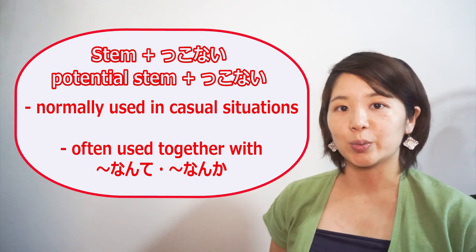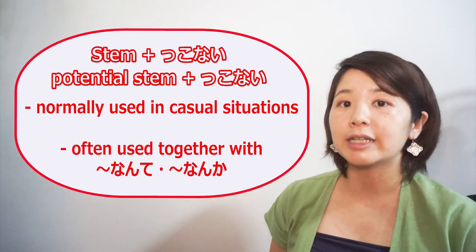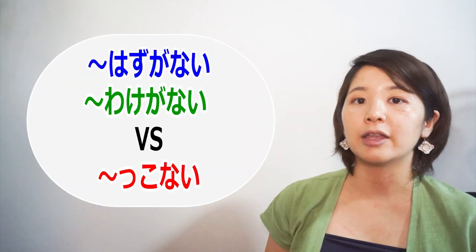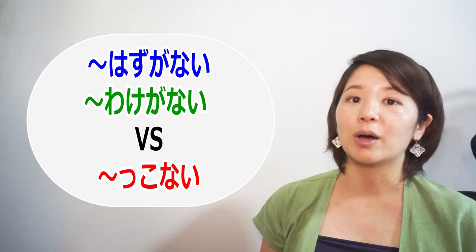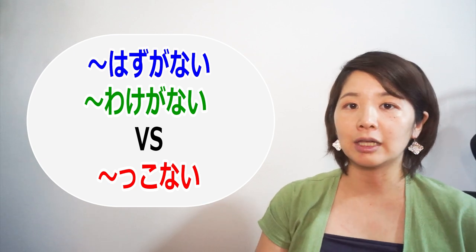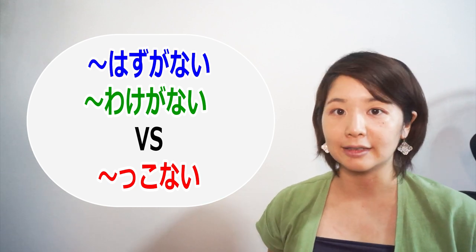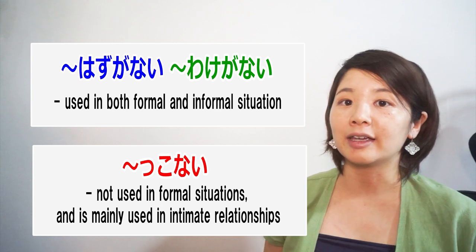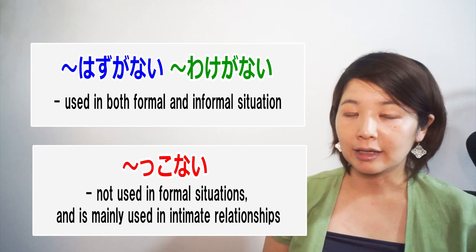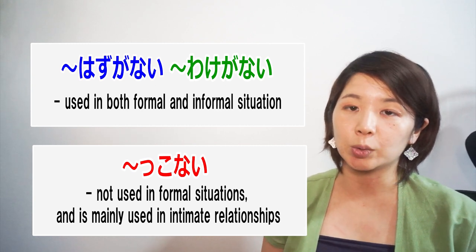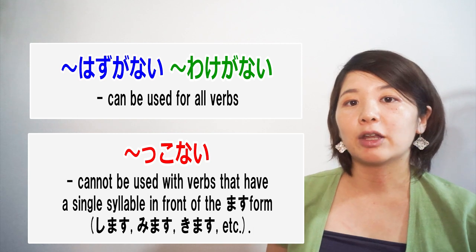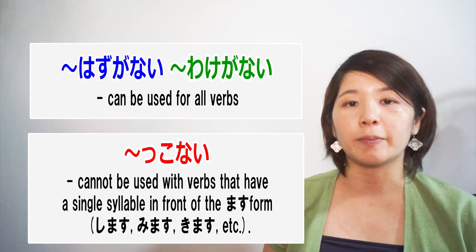Nante and nanka are used when you want to be humble or when you want to look down on something. In other Japanese expressions, we have hazu ga nai and wake ga nai. These also have the same meaning as konai. Now, what is the difference? Hazu ga nai, wake ga nai, and konai are all used when you want to strongly deny something. However, while wake ga nai and hazu ga nai are both used in casual and formal situations, konai is only used in casual situations.